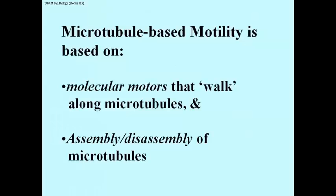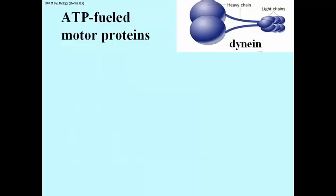Microtubule-based motility is predicated on molecular motors that walk along microtubules, and in some cases is predicated on the very dynamic nature of microtubules, in fact their instability. We're going to look at examples. Let's talk first about motor proteins.